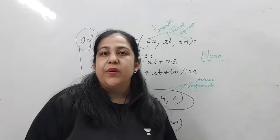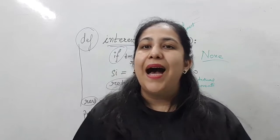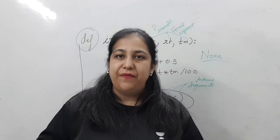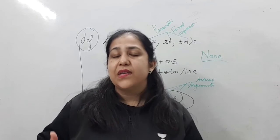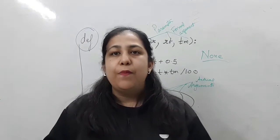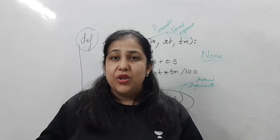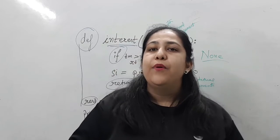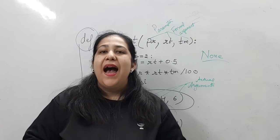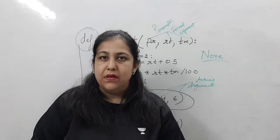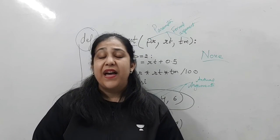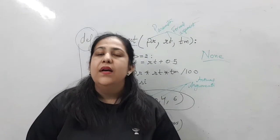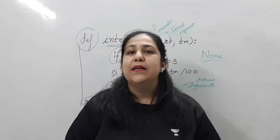In tomorrow's video — which will be Day 14 — we will cover how to work with default arguments, how to use loops inside functions, and how to pass a list as an argument to a function. I'll explain all of that tomorrow. Until then, try this question: receive a number and print its multiplication table — for example, if 5 is received, print 5, 10, 15, 20... up to 50. What will the function code look like? Write your answer in the comments.